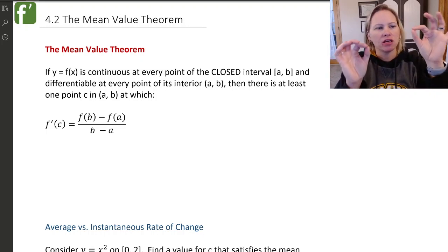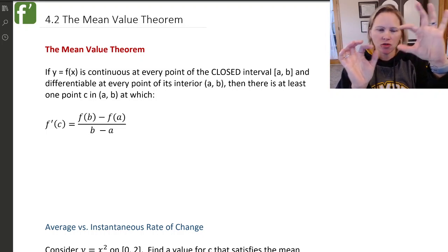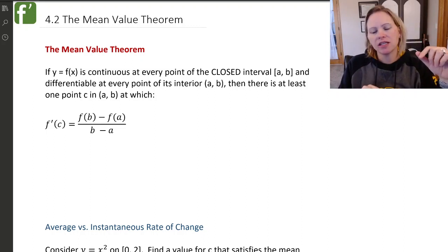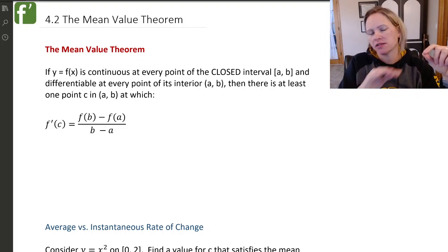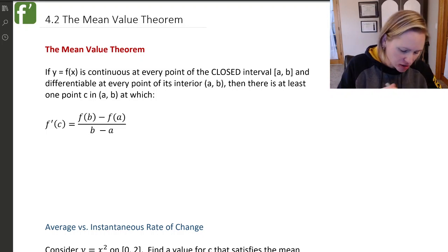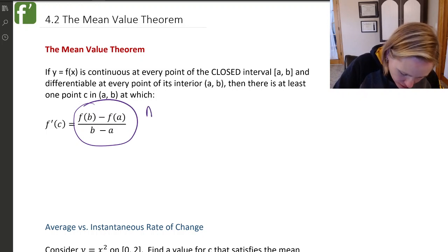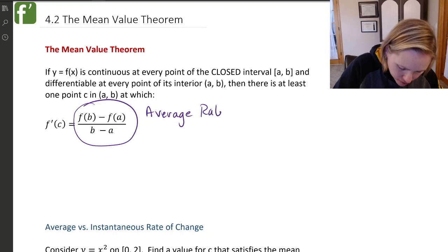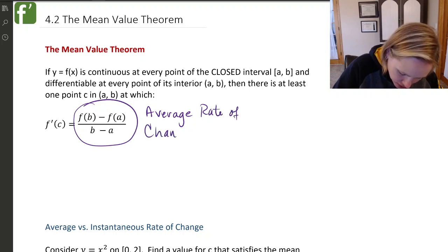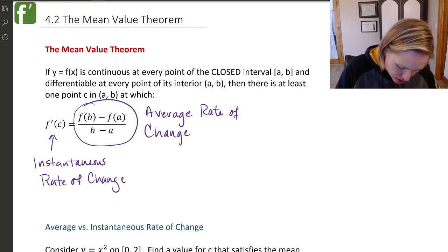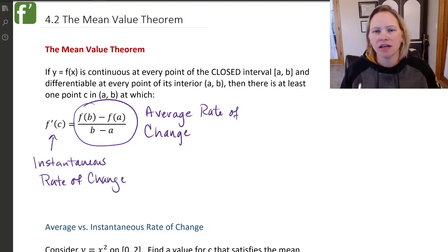If those conditions are met and you can find the average rate of change between the endpoints — the slope between the two endpoints — you are guaranteed by the mean value theorem to find a point somewhere in that interval where the derivative at that point equals the slope between the endpoints. The derivative is the rate of change at a single instant; the average is over an interval.